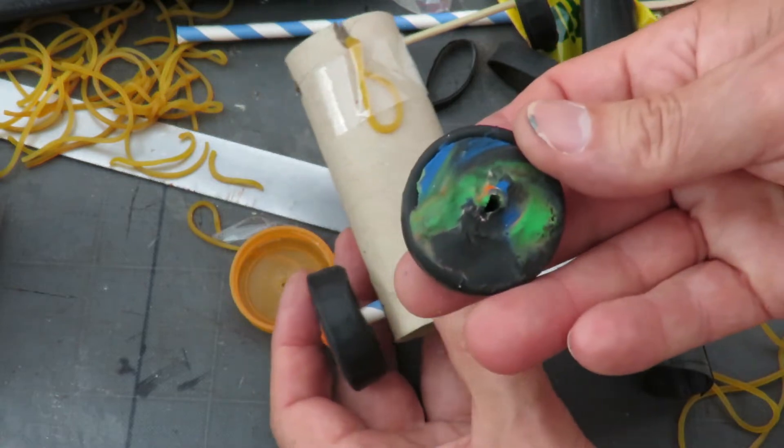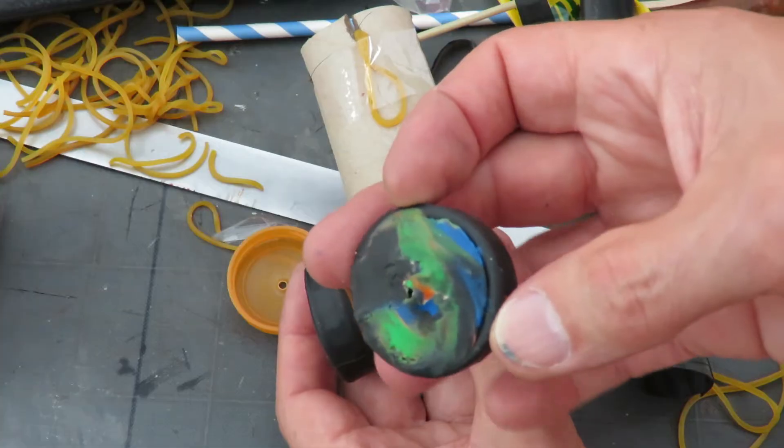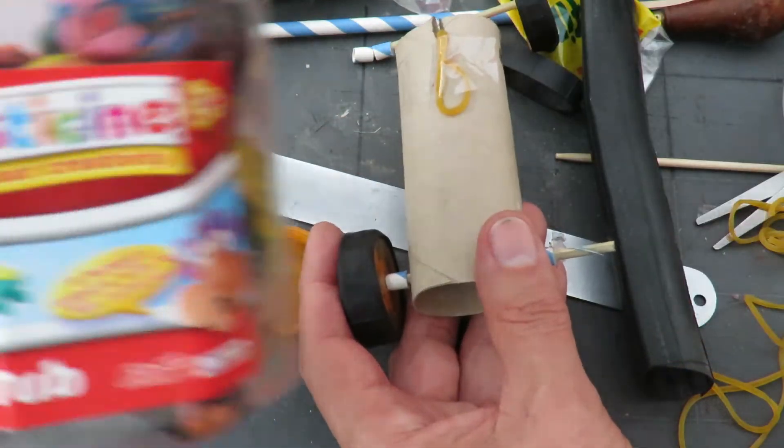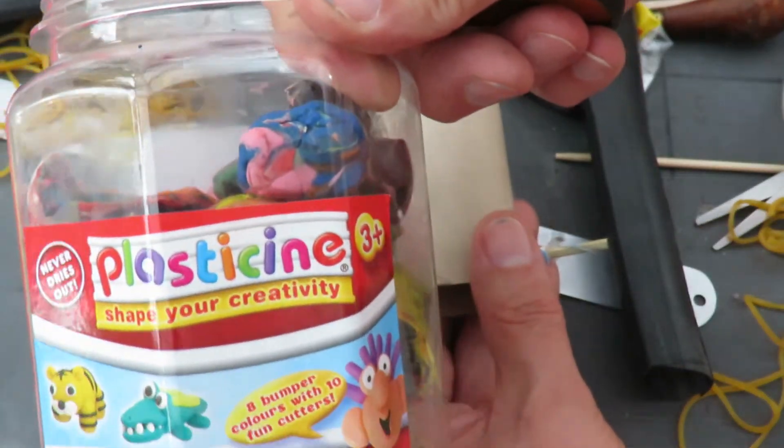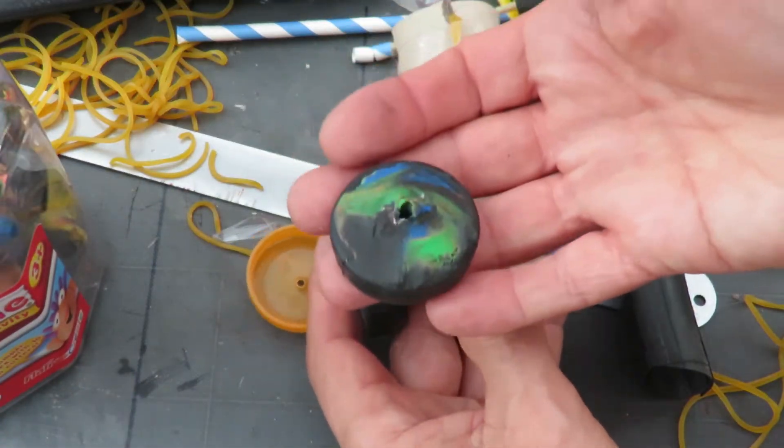Now the back wheels, even with the rubber tires, they were still slipping, still spinning. So I filled them with plasticine or modeling clay, whatever you want to call that, to give them extra weight.